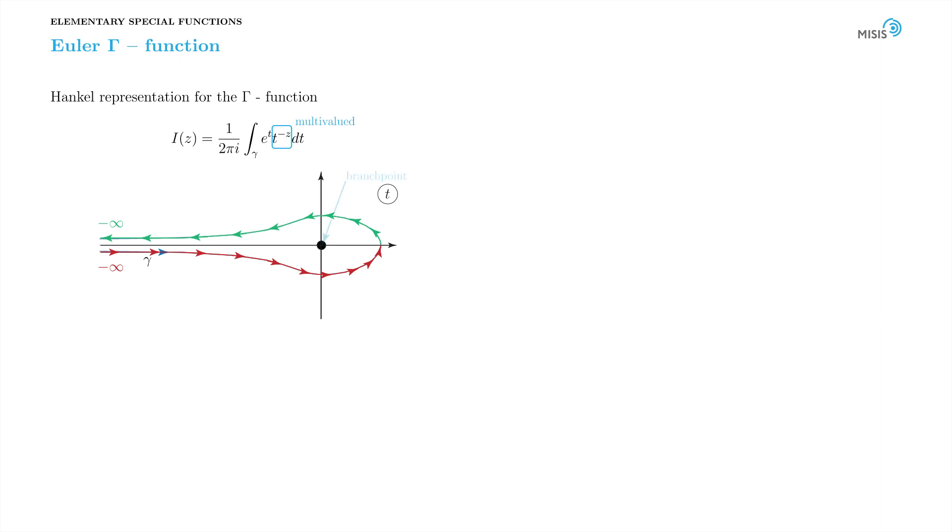t equals zero serves as a branch point. To define the function uniquely, we need to draw a branch cut and fix the regular branch. So we place a branch cut in such a way that it doesn't cross the path of the contour, namely along the left real semi-axis. We fix the regular branch by the condition that function t to minus z is positive for positive t.